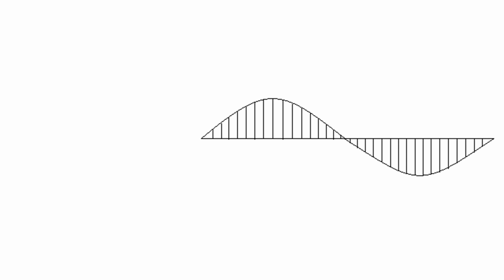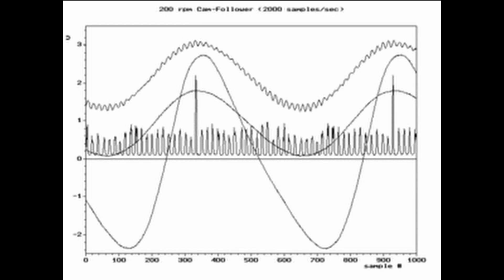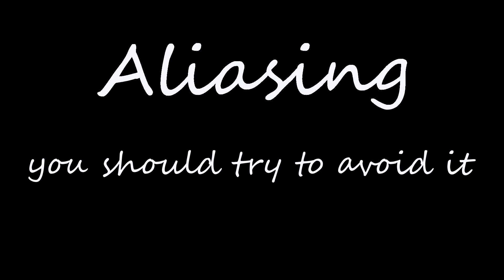Sampling is cool, but sampling too fast is wasteful. So what if you sample slower? Well, it starts going well, but then all of a sudden your reconstructed signal looks whack. This is called aliasing. You should try to avoid it.